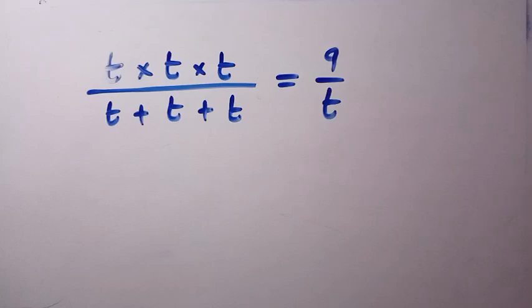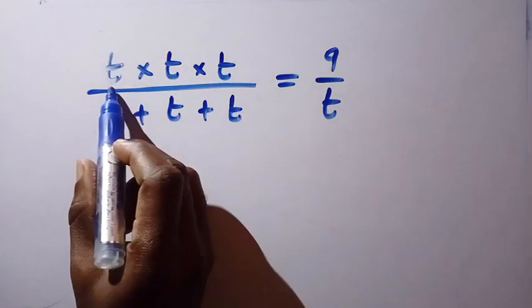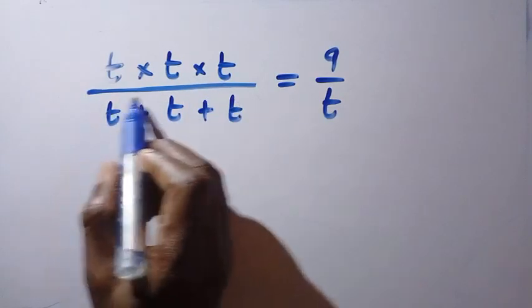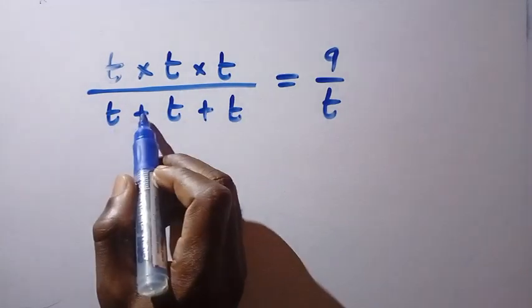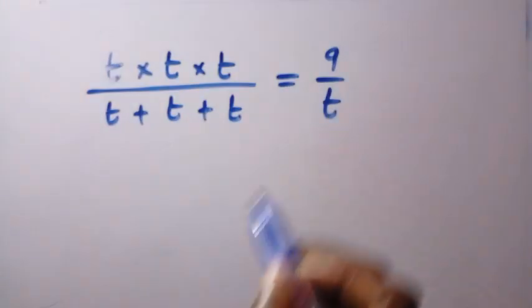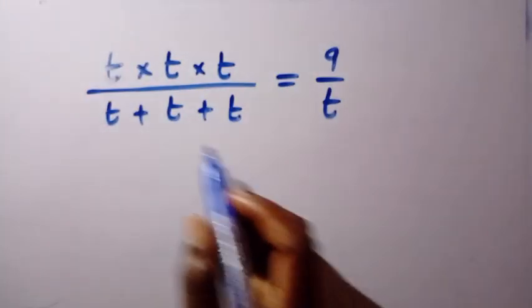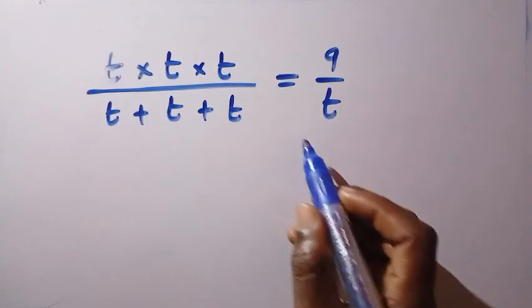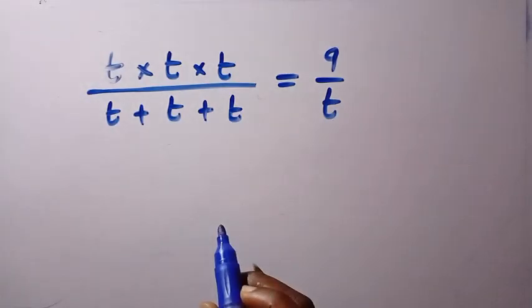Good day viewers, you are welcome. Here we have the interesting algebraic equation: t multiplied by t multiplied by t, divided by t plus t plus t, equals 9 divided by t. And we want to find all the values of t that satisfy this problem.